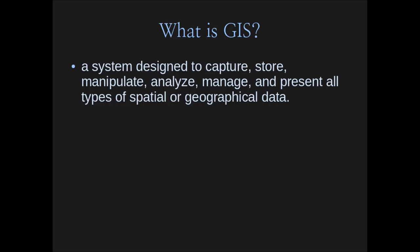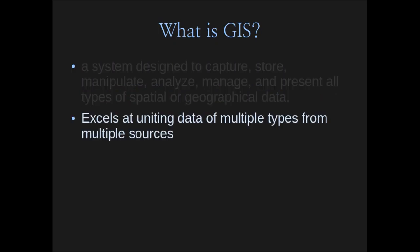That leads into what I'm covering today: geographic information systems, the modern way we look at defining, managing, and analyzing geographic or spatial data. GIS is a system designed to capture, store, manipulate, analyze, manage, and present all types of spatial or geographic data. While geographic information is in the name, and it's often used for things on Earth's surface, it's also used for many applications that are spatial but not necessarily geographic in nature.